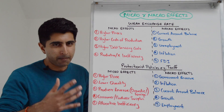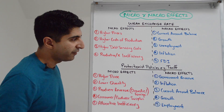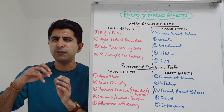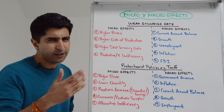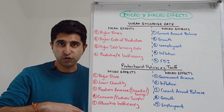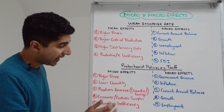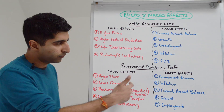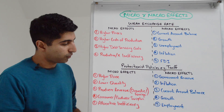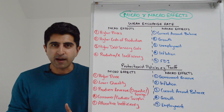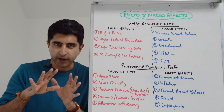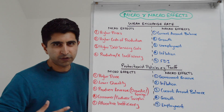Let's move now to the micro and macro effects of protectionist policies like a tariff. On the micro side, just think about your tariff diagram — it will give you loads of easy micro effects. We can see on the diagram that prices go up with a tariff, and you can worry about the impact on consumers and firms as a result. The same applies to lower quantity overall in the market, which is a negative impact on consumer and producer choice. You can then look at producer revenue — domestic producer revenue goes up with a tariff, while foreign producer revenue comes down.